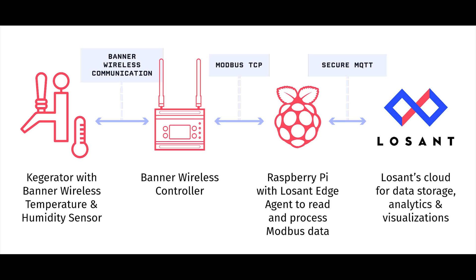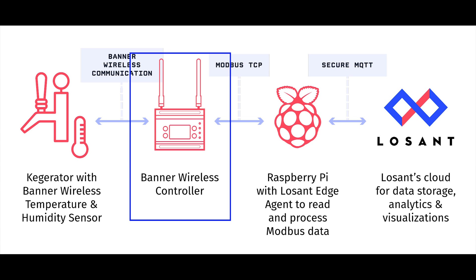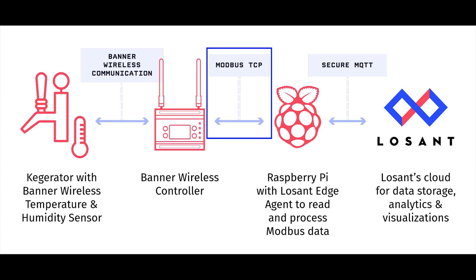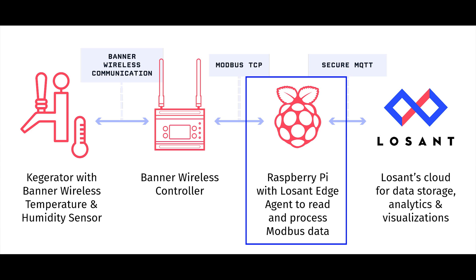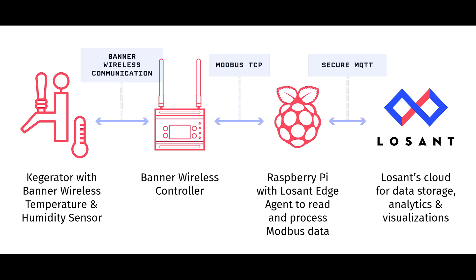To demonstrate Edge Compute, we have a kegerator with a Banner temperature and humidity sensor installed inside, a Banner wireless controller, and a Raspberry Pi. The Banner wireless controller reads sensor data from the remote sensor in the kegerator, then exposes that information to my local network over Modbus TCP. After that, the Raspberry Pi acts as a gateway that can read the Modbus TCP endpoint and report the temperature and humidity data to the Losan cloud.